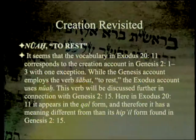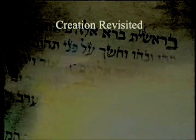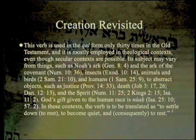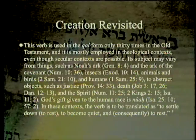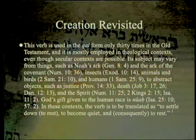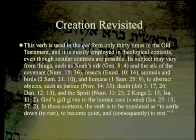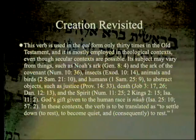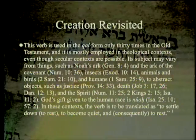In Genesis 2:15, 'nuach' appears in its hiphil form — the causative form, meaning 'he will cause something to happen.' This verb is used in the qal form only 30 times in the Old Testament and is mostly employed in theological contexts, even though secular contexts are possible. Its subject may vary from things such as Noah's Ark, the Ark of the Covenant, insects, animals, birds, and humans, to abstract objects such as justice, death, and the spirit.